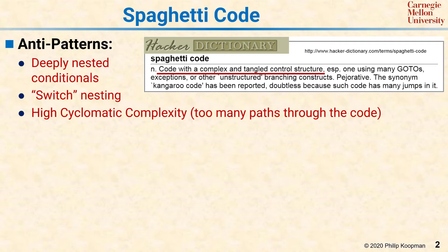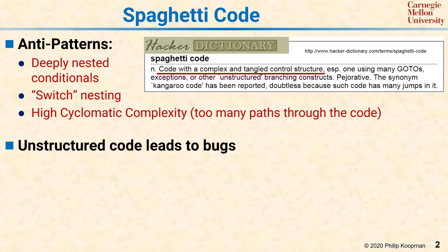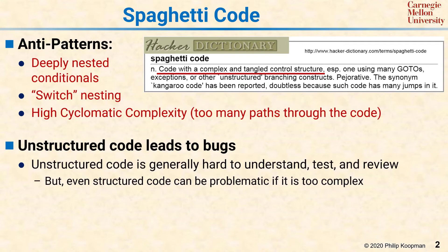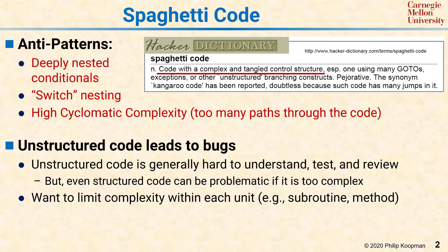This topic is important because complex code tends to be buggy code. It is well known that unstructured code tends to be buggy because it is generally hard to understand, difficult to test, and very difficult to peer review effectively. But even structured code can be just as hard to understand, test, and review if it is too complex. The general idea of avoiding spaghetti code is to limit the complexity within each unit of code, such as a subroutine or method.